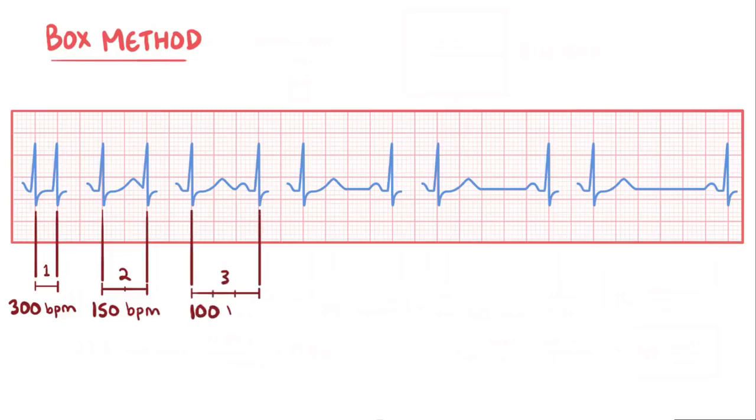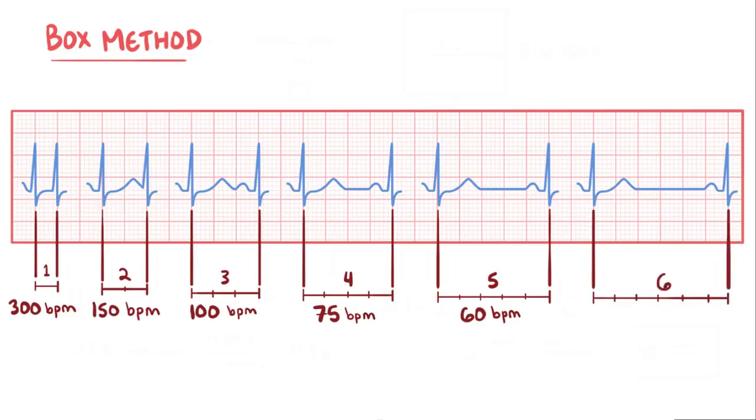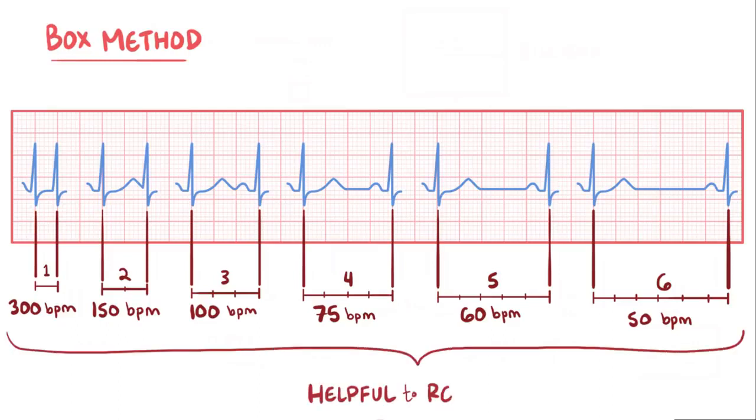Four big boxes is 75 beats per minute, five big boxes is 60 beats per minute, and finally six big boxes apart is 50 beats per minute. Remembering these numbers makes it easier to make a rough estimate of the rate.